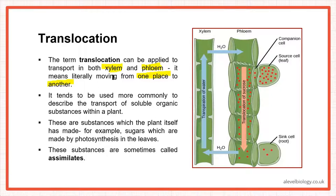Translocation more commonly describes the transport of soluble organic substances within the plant — sucrose, amino acids, and other assimilates. These are organic substances made by the plant itself, like the sugars produced during photosynthesis that then have to be transported. These organic compounds are also known as assimilates.